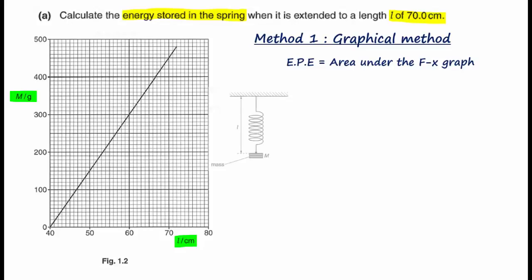To do that, we look at Figure 1.1. We note that m is the mass hung on the spring, so the force extending the spring is m times g. To find F, we take each value of m and multiply it by g. Because we have only multiplied each m by a constant g, the shape of the F versus L graph looks the same as the m versus L graph.